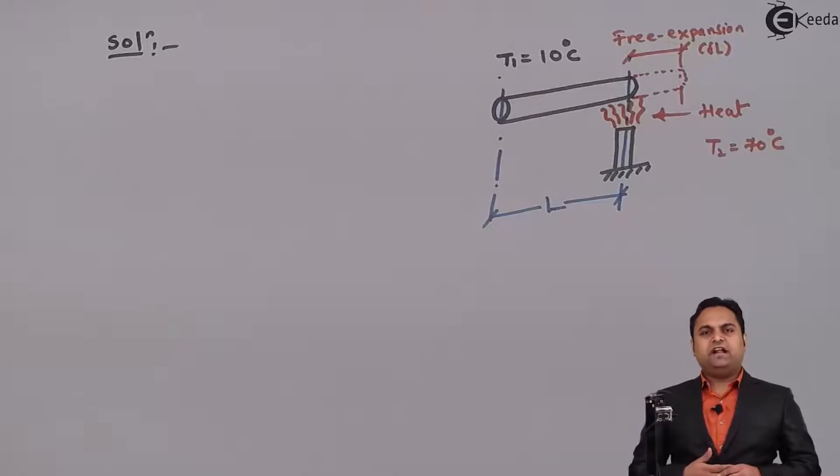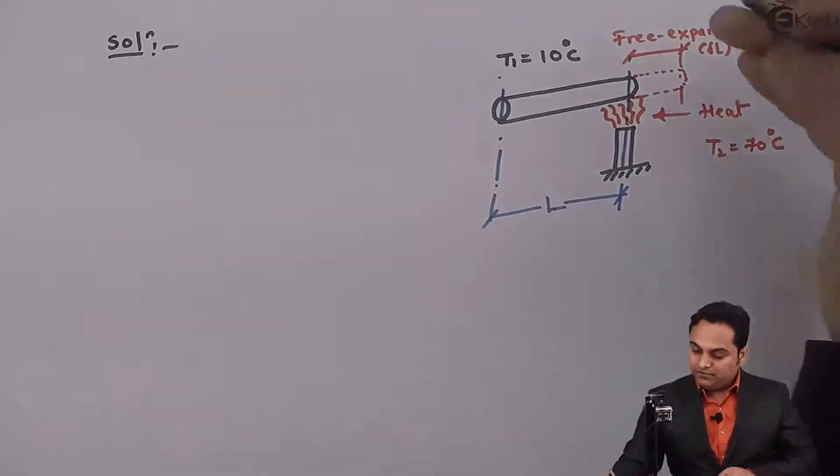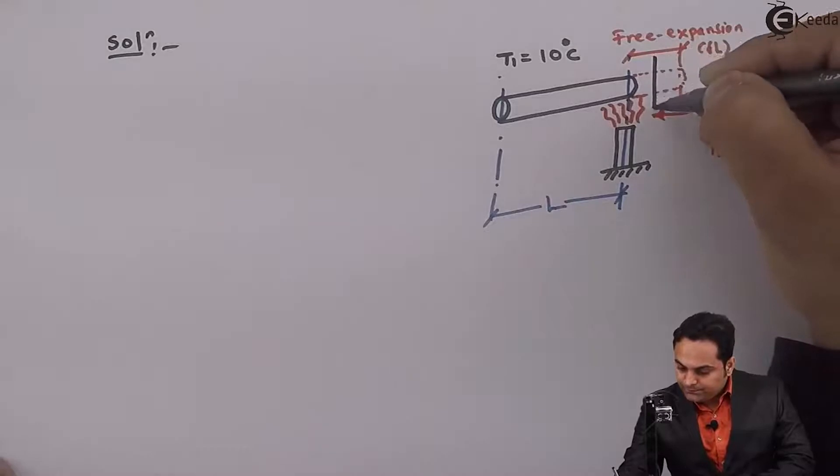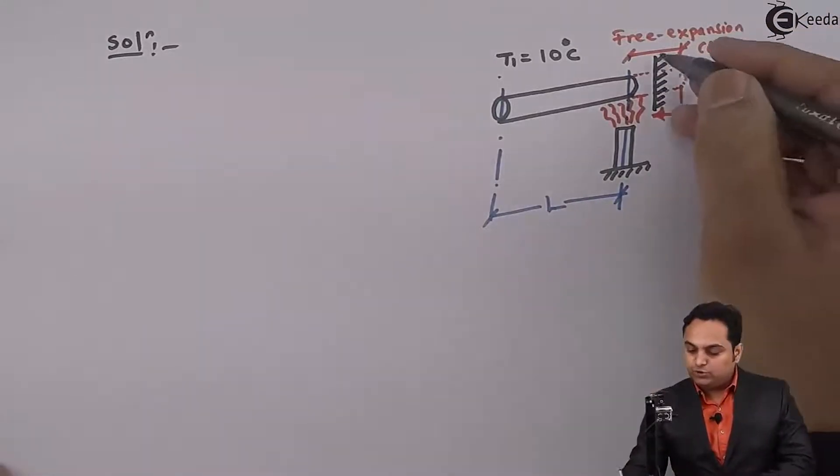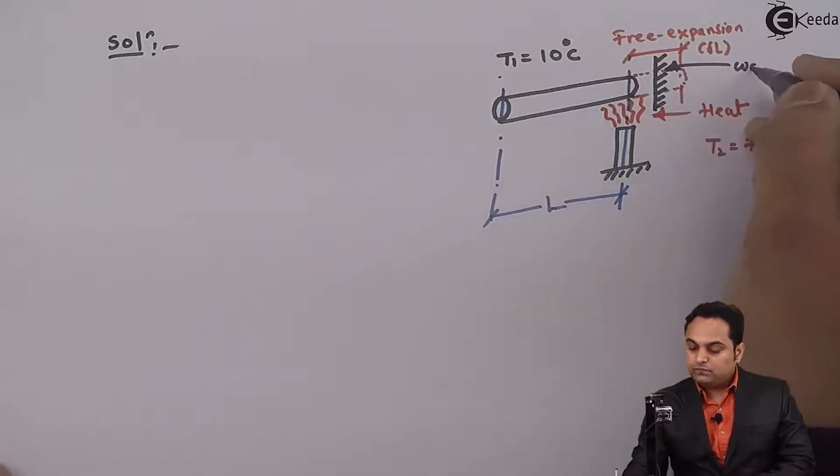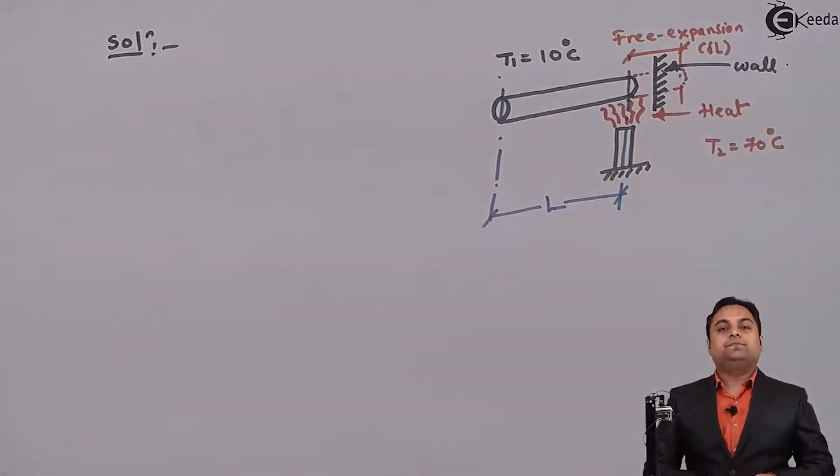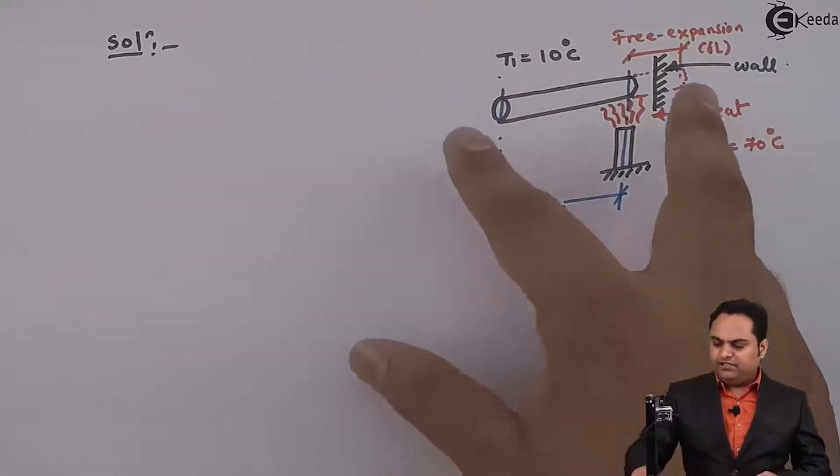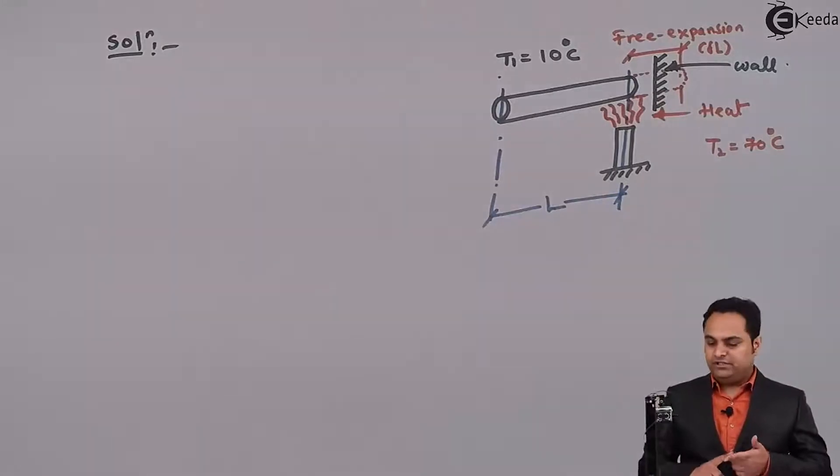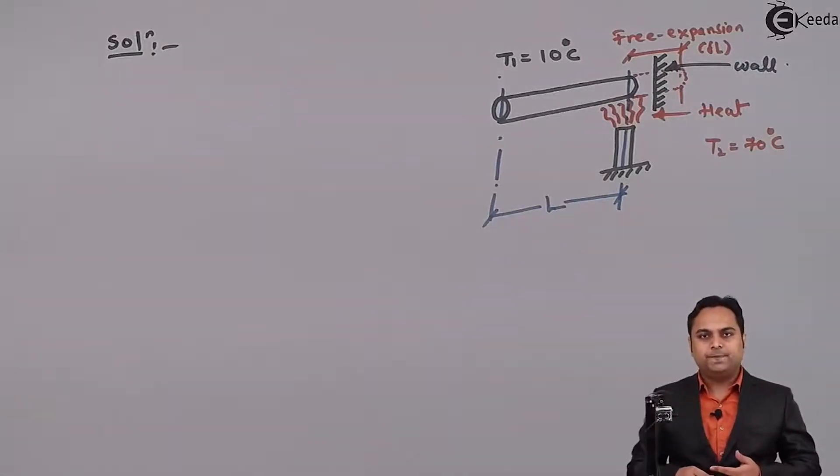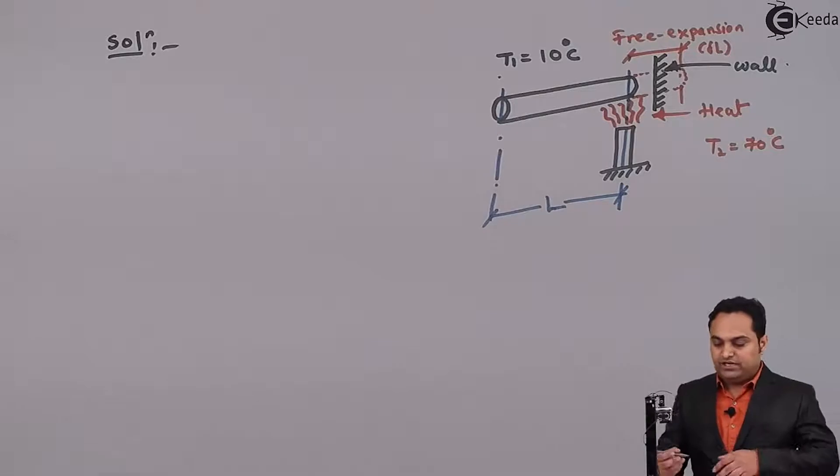But if we try to stop this free expansion completely or partially, suppose in this example, here we have a wall which is trying to stop the free expansion of the metal rod. So when the free expansion is prevented, at that time there will be temperature stress developed in this metal rod.